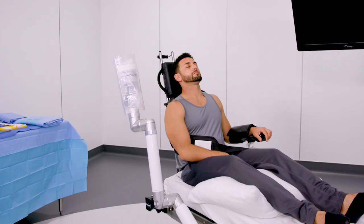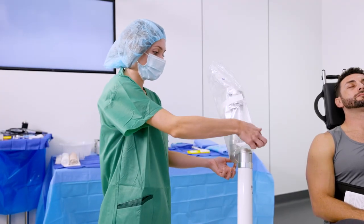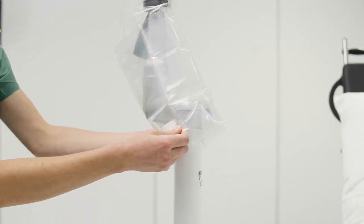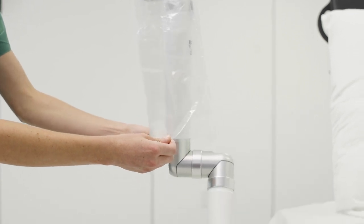With the support arm in the neutral position, fully extended towards the ceiling, hold the sterile sheath at the bottom and slide fully over the arm until the side rail is reached.